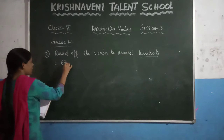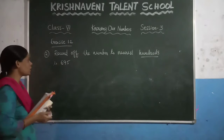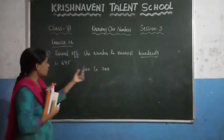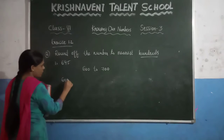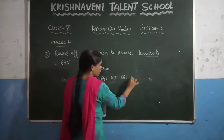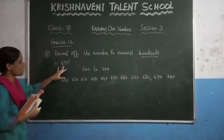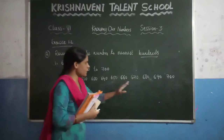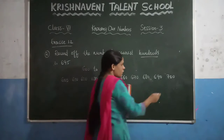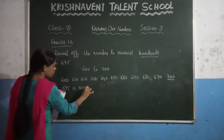See the first question: 695. You know that it is a 3-digit number and 695 will be located in between 600 to 700. In between 600 to 700, write the numbers: 600, 610, 620, 630, 640, 650, 660, 670, 680, 690, 700. Now you can observe that 695 is in between 690 and 700. Clearly, 695 is nearer to 700. So write: 695 is nearer to 700.